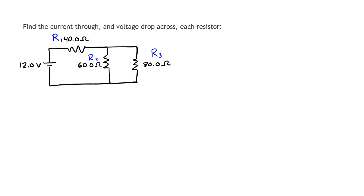I like to start with simple resistors that are in series with one another. But as you can see from this circuit, we don't actually have any simple series resistors right now, so we're going to have to start with the parallel resistors. We need to take these two parallel resistors and find their equivalent resistance. The formula for finding the equivalent resistance REQ is: one over REQ equals one over R2 plus one over R3.